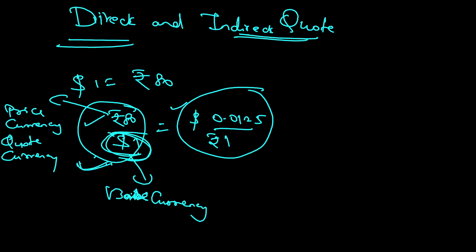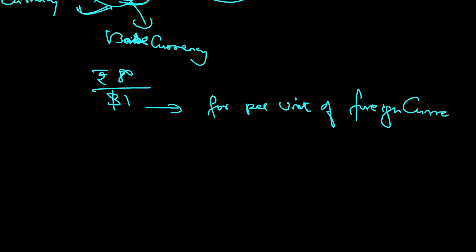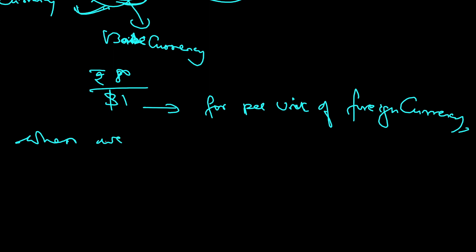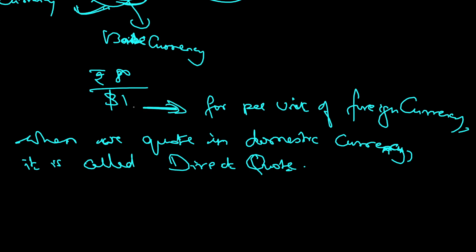So what is a direct quote? If I say one dollar is 80 rupees, that means for per unit of foreign currency — here the US dollar is the foreign currency — when we quote in domestic currency, it is called a direct quote. So we follow direct quote in India. The domestic currency required per unit of foreign currency is 80 rupees.